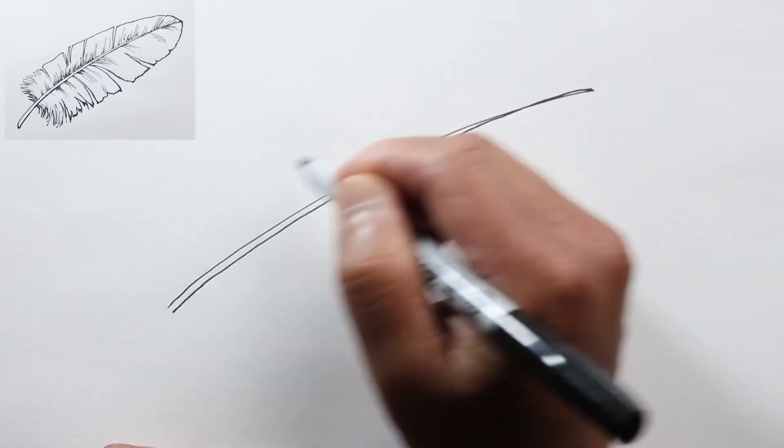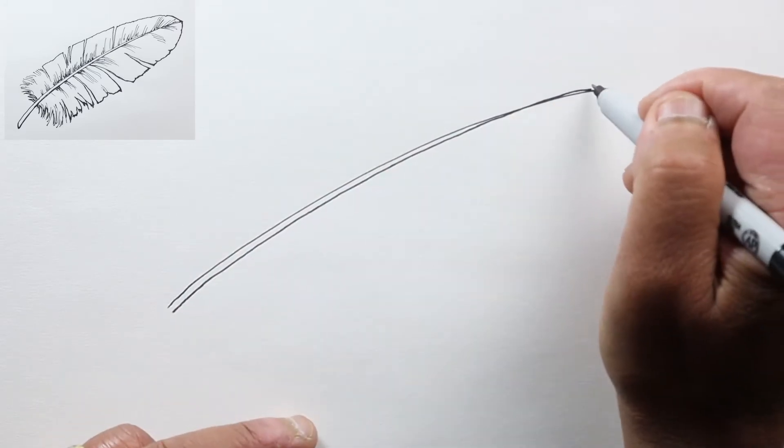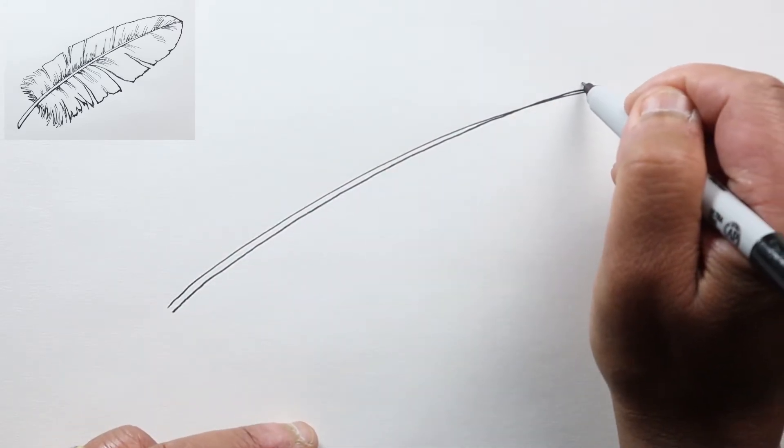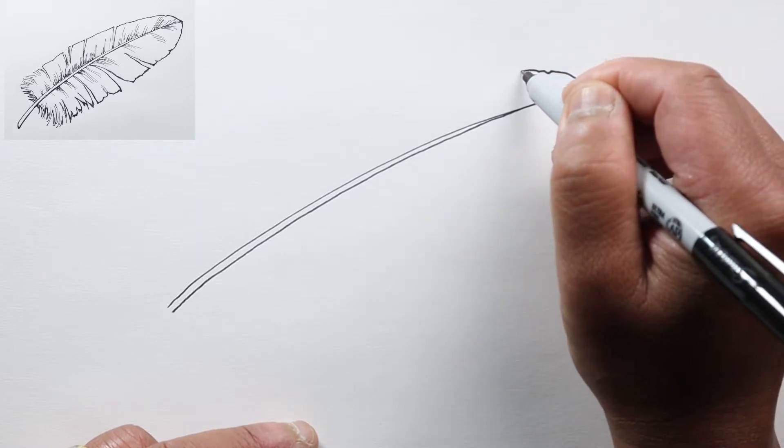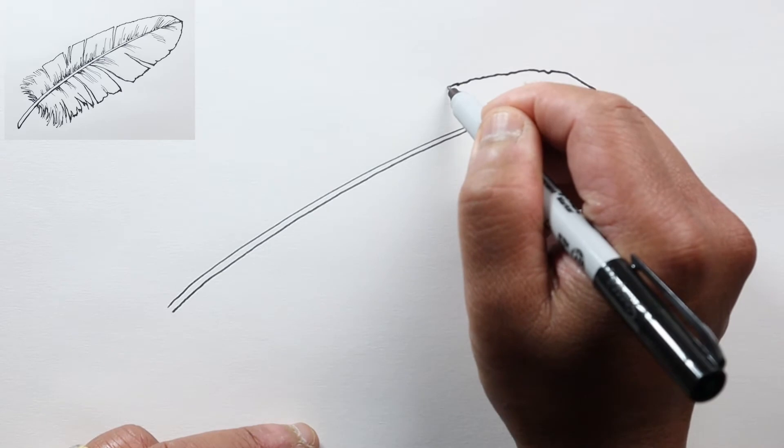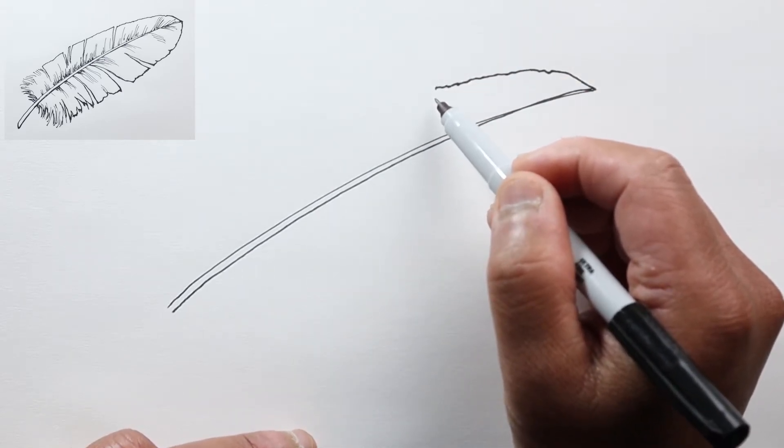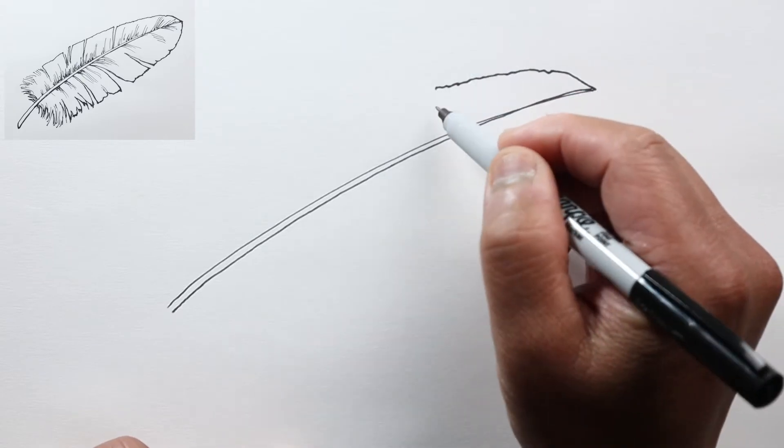We're going to go further and further away from the rachis. Let's start right here, and you can kind of make this line somewhat undulating. And then at some point, the feather itself—these parts here, the barbs—start to separate.